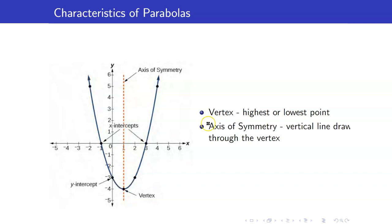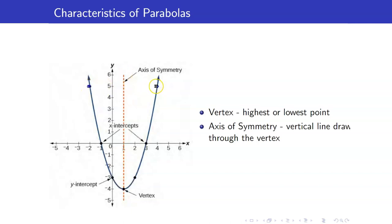Here are some characteristics of a parabola. The vertex is either your highest or your lowest point. Since we have a parabola opening upwards, this is our lowest point. The axis of symmetry is just the vertical line drawn through the vertex. It's called the axis of symmetry because you can reflect the parabola along this axis and you will get the same graph. So we say that this point is the mirror image of this point.